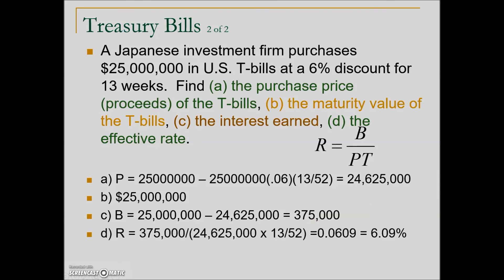What is the effective rate? We use the formula: bank discount divided by proceeds times time. With the particulars: the bank discount of $375,000 divided by the quantity of proceeds times the time — and because this is in weeks we express it over 52 to have time in terms of years. We get a decimal value of 0.0609, which is equivalent to 6.09%.